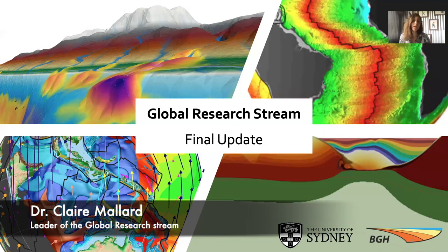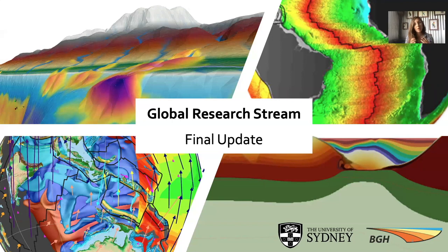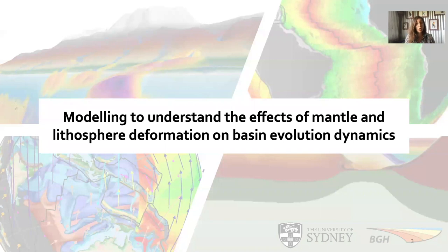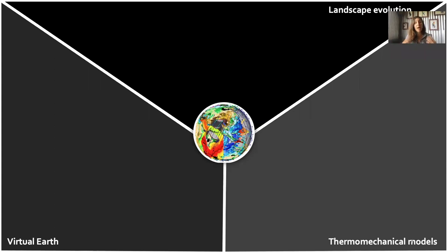Hello everybody! Here's the final update of the Global Research Stream. As you know, this stream is quite big, so this year I didn't want to focus only on the updates of this year, but I will show you what we had when we started and what is the evolution of this stream. The overall goal of the Global Research Stream is to use different types of models to understand the effects of mental and lithosphere deformation on Bayesian evolution dynamics. To do that, we have a very big and diverse group with different components.